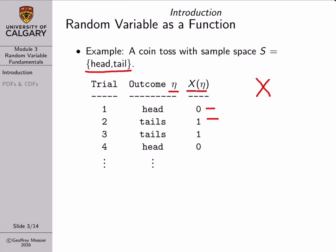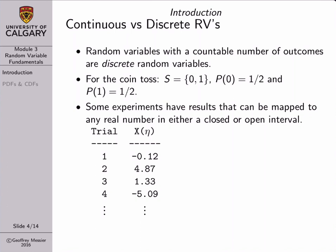In this course we're going to be working with two types of random variables: discrete and continuous. Random variables that have a countable number of outcomes are referred to as discrete random variables. Our coin toss example is a good example of that. For our coin toss, our universal set contains the numbers zero and one, and we can assign probabilities to those outcomes: the probability of zero is equal to a half, and the probability of getting a one is also equal to a half. So discrete random variables have a countable number of outcomes.